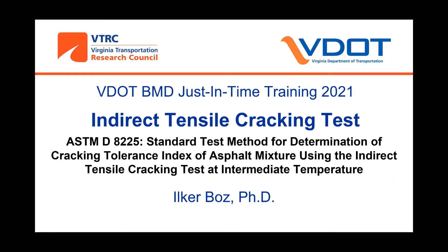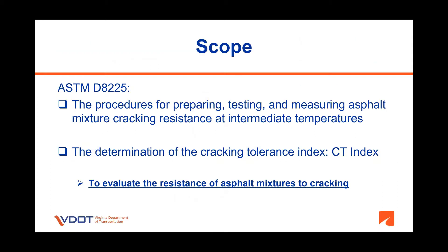This is a test method required by VDOT to evaluate cracking potential of asphalt mixtures as part of the balanced mix design process. This test method covers the procedures for preparing, testing, and measuring asphalt mixture cracking resistance using cylindrical laboratory-prepared asphalt mix specimens at an intermediate temperature. It describes the determination of the cracking tolerance index, or CT index, determined from the load displacement curve obtained from the indirect tensile test. This parameter can be used to evaluate the resistance of asphalt mixtures to cracking.